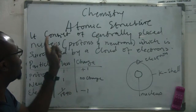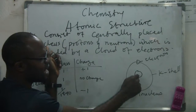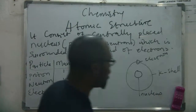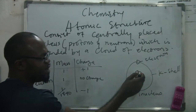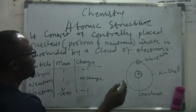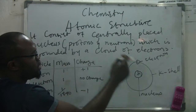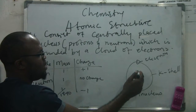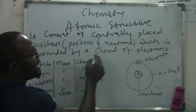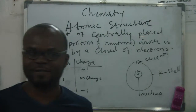What is atomic structure? It consists of a centrally placed nucleus. This is the nucleus — it's centrally placed, it's in the center. And this nucleus contains protons and neutrons, which is surrounded by a cloud of electrons.